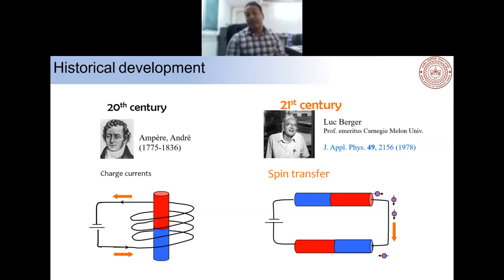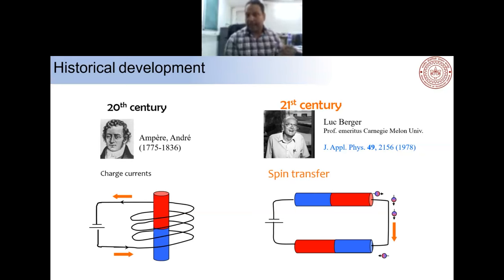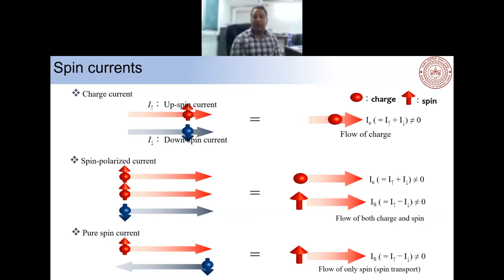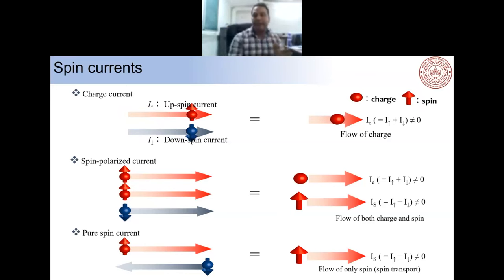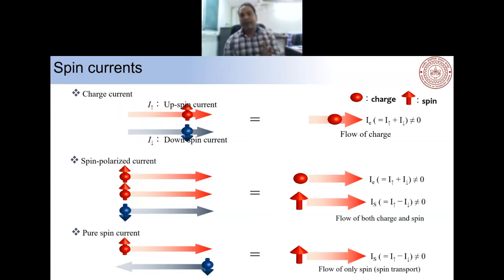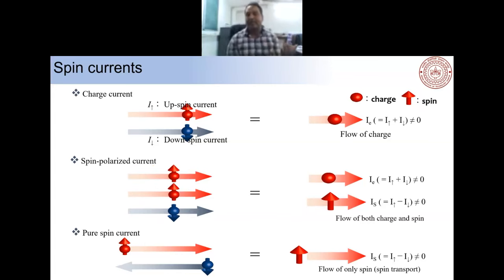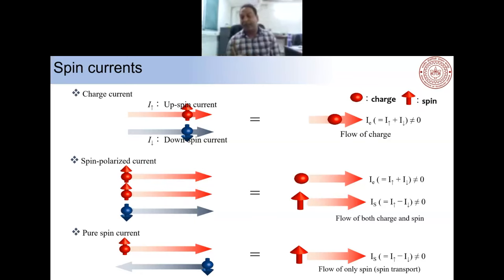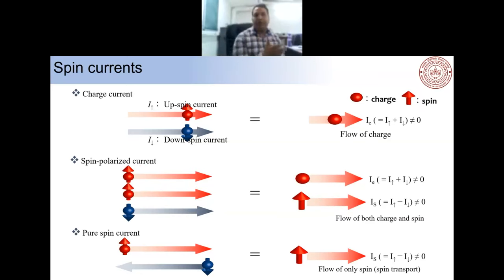Spin current can be defined by three means. First, a pure charge current is an unpolarized current where the population density of up-spin and down-spin is equal. Second, when you pass this current through a ferromagnetic material instead of a normal conductor, the population density of up-spins becomes higher than that of down-spins, giving you a charge current plus a spin current — this is a spin-polarized current, which depends on the band structure of the material.